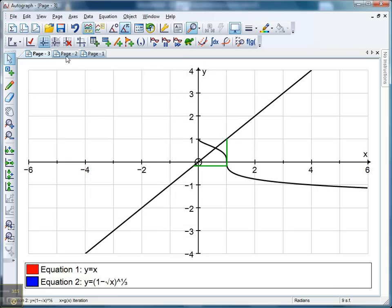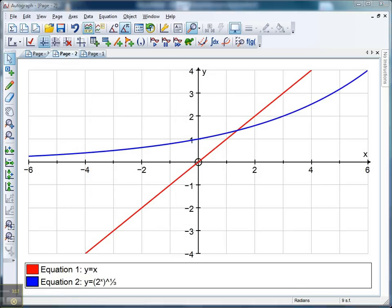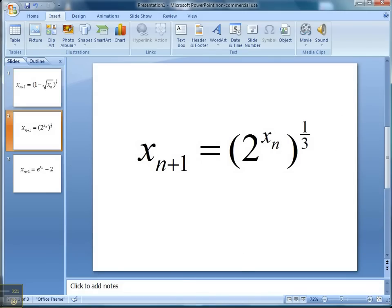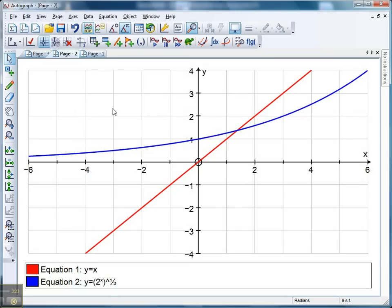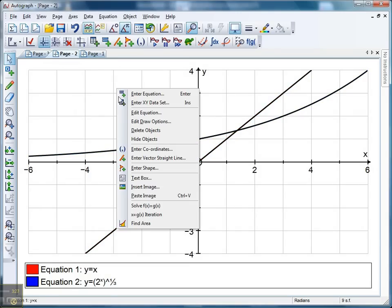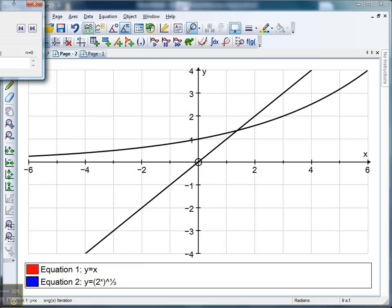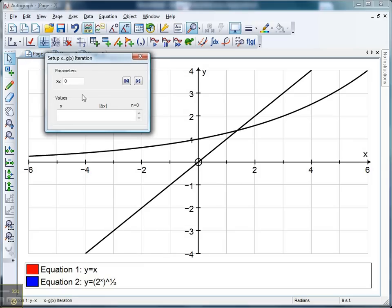Next one is another good one. The equation I've gone for this time is this. So it's 2 to the power of x, again, all cube rooted. Let's have a look at that. And we get this set up. Again, if I select that and I select that and I right click and I go for iteration. Let's try a value this time. Let's go for something like x equals minus 1. See what happens there.